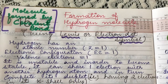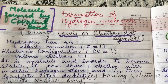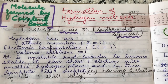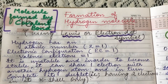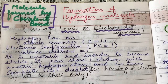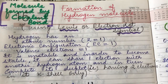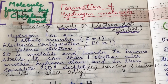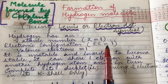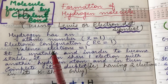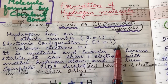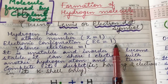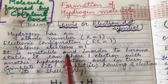Let us try to understand the formation of hydrogen molecule using Lewis or electron dot structures. Before we start, you need to understand that hydrogen is an atom which has atomic number one, an electronic configuration of one, and the number of valence electrons is one.